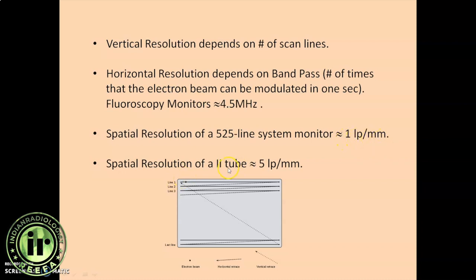Whereas the image intensifier tube has 5 line pairs per millimeter. The image intensifier tube that is connected to the video camera. That video camera video signal is sent to the television monitor. So at the starting stage we have 5 LP per millimeter. But at the end when it reaches it degrades. Its capacity is only one line pair per millimeter. So the image quality is degraded as it proceeds from II tube to the last link in the chain, the monitor.